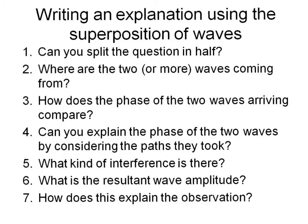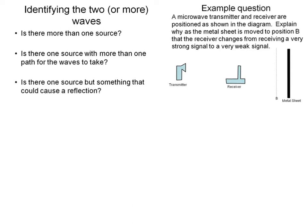Now we need to consider where are the two or more waves coming from. Some prompt questions: firstly, is there more than one source? In this case, no — there is only one transmitter. Second question: is there one source with more than one path for the waves to take? At first glance it appears not; the waves would just go from the transmitter to the receiver. But if we think about whether something could cause a reflection, we realise that the metal sheet could cause a reflection, which means as well as a path from the transmitter directly to the receiver, we could also have a path from the transmitter to the metal sheet and back to the receiver.